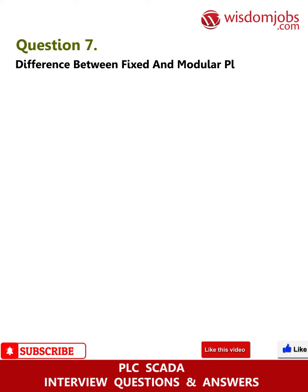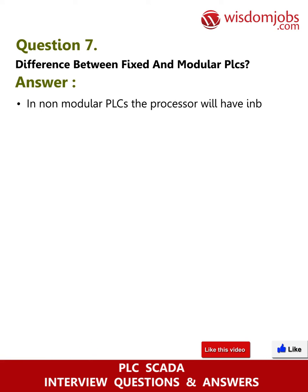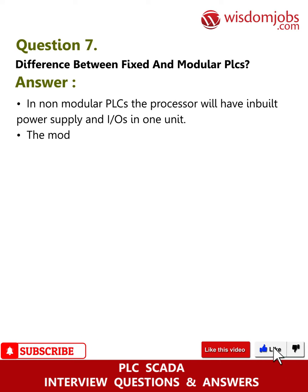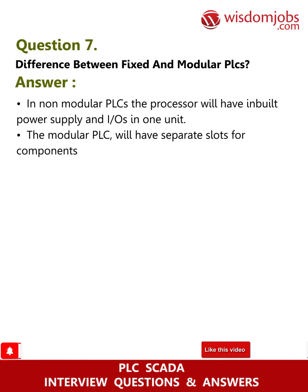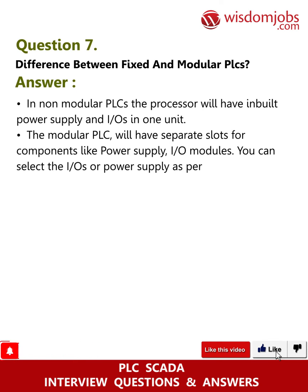Question 7: Difference between fixed and modular PLCs. Answer: In non-modular PLCs, the processor has a built-in power supply and I/Os in one unit. The modular PLC has separate slots for components like power supply and IO modules, allowing you to select the I/Os or power supply as per the need.